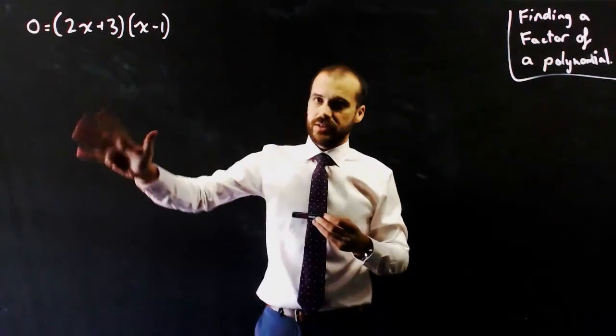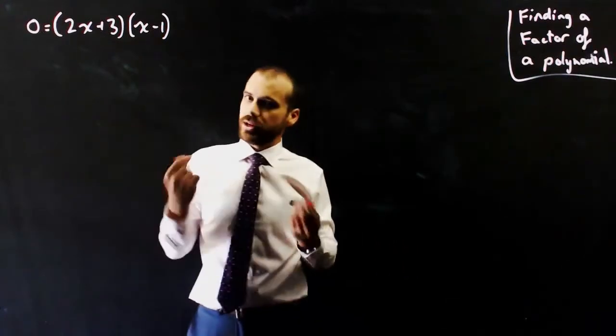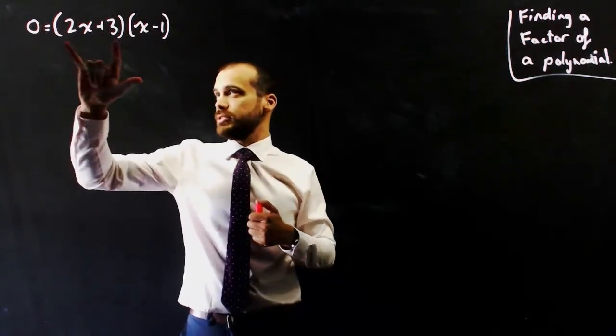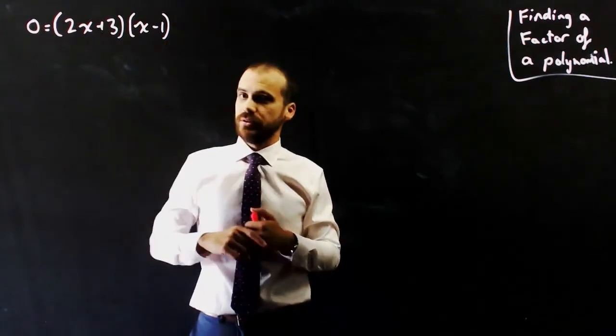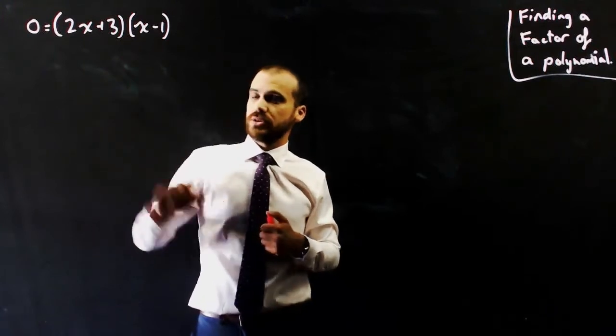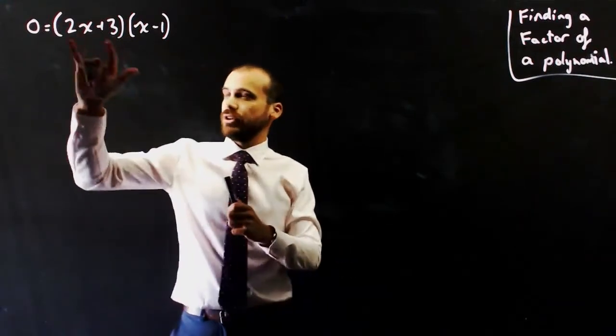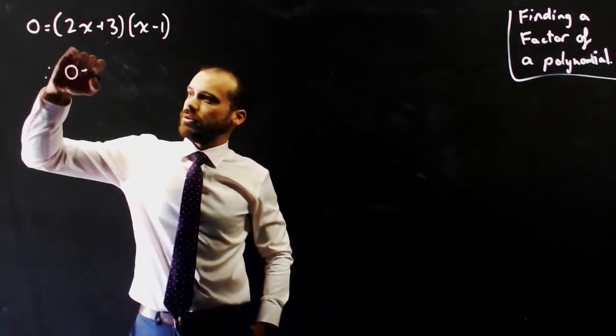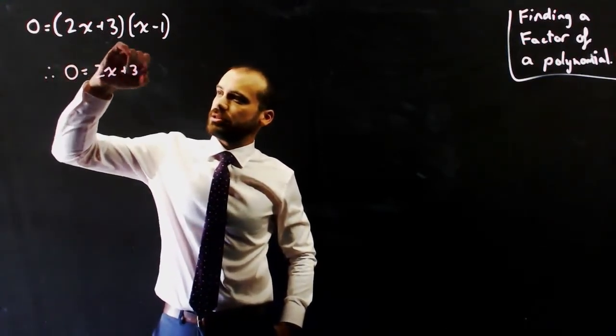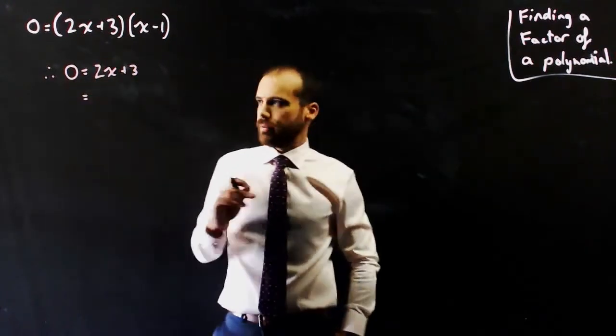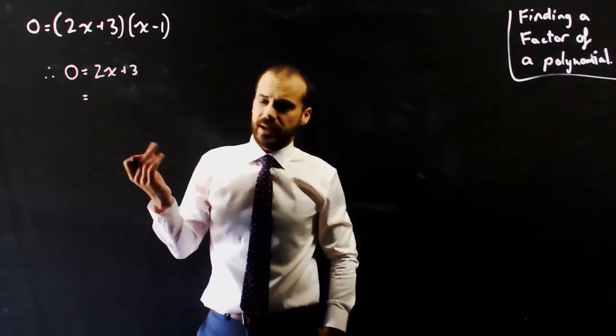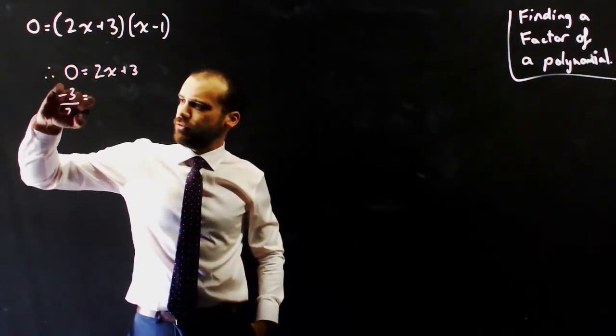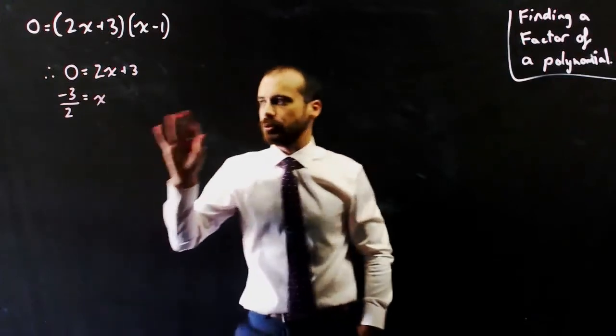Let's take a look at this first of all. Now, you already know the null factor law, which says that if this times this is equal to 0, then this must be equal to 0, or this must be equal to 0. I'm going to focus on that one for now. Therefore, 0 is equal to 2x plus 3. Now, if I rearrange that to make x the subject, I get negative 3 over 2 is equal to x.